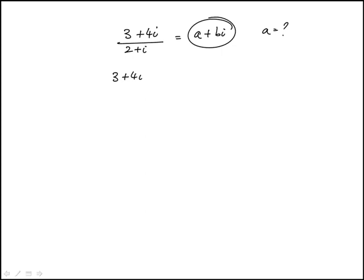So we need to eliminate the i in the denominator, so we do that by multiplying by its conjugate, multiplying and dividing.